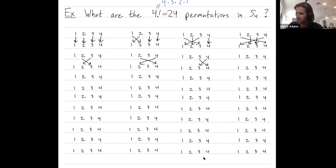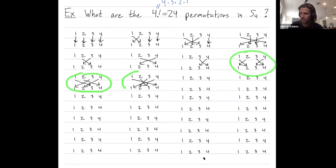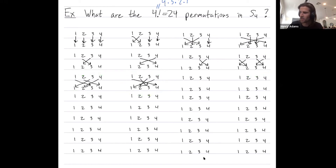I then have pairs of transpositions — products of disjoint transpositions. I could swap 1 and 2 while swapping 3 and 4 at the same time. Or swap 1 and 3 while swapping 2 and 4. Or swap 1 and 4 while swapping 2 and 3. These two transpositions are disjoint — they don't share any elements — but I do them both.